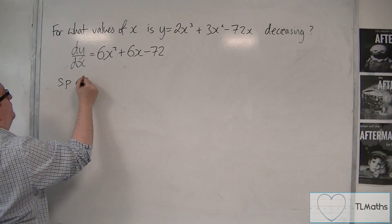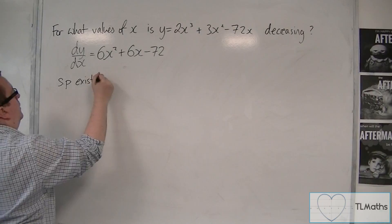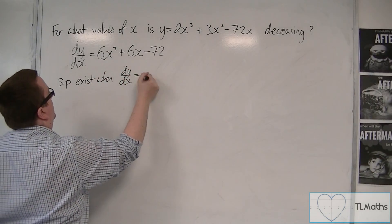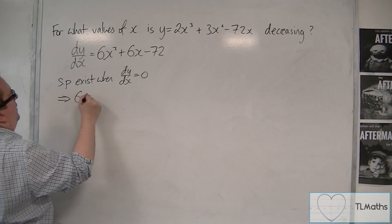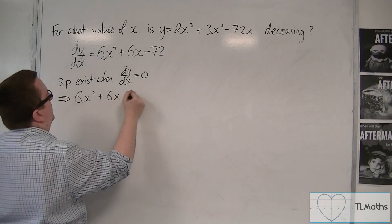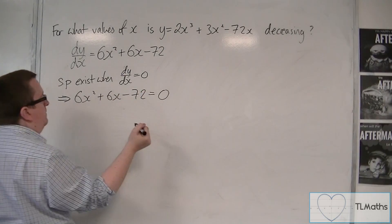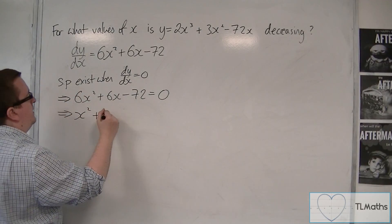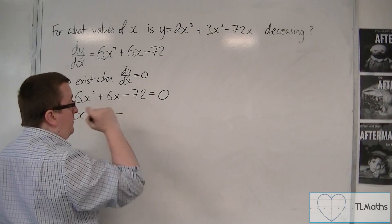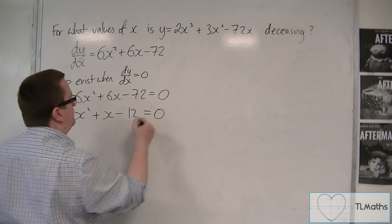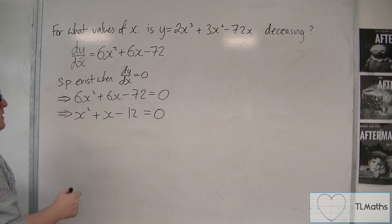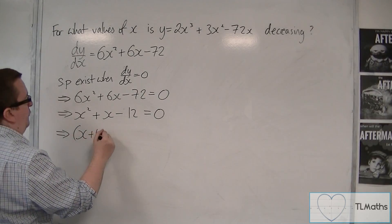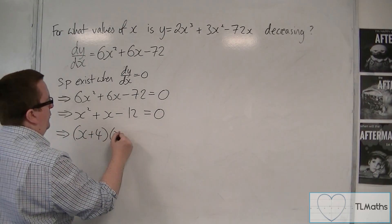Stationary points exist when dy by dx is 0. So we put 6x squared plus 6x minus 72 equal to 0. You could divide that through by 6 to simplify the quadratic — 72 divided by 6 is 12. This quadratic can then be factorised, giving x plus 4 times x minus 3.